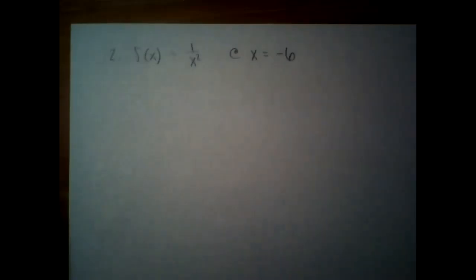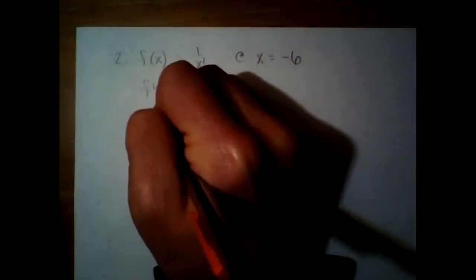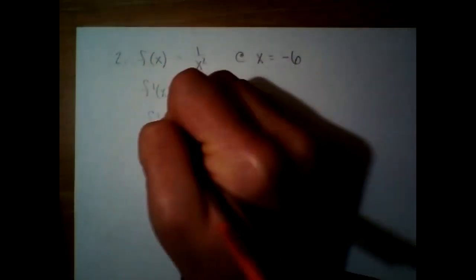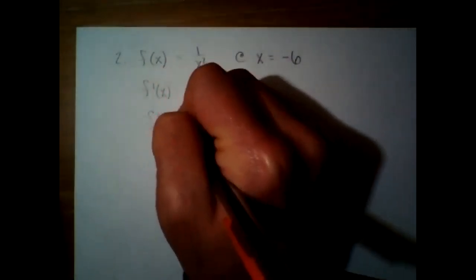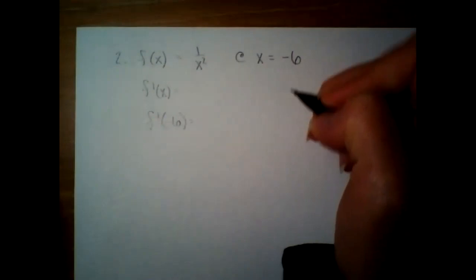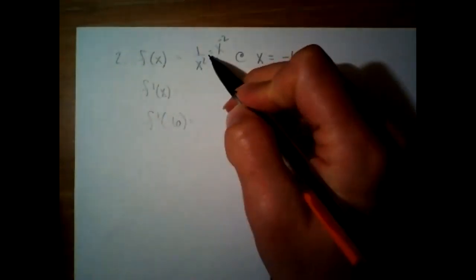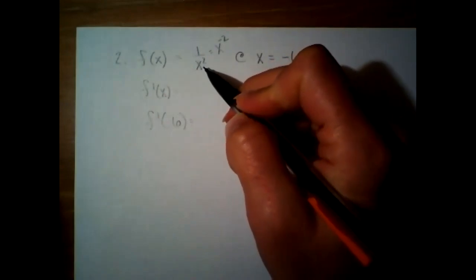For this one, we're going to find the derivative and then plug in negative six. I am going to rewrite this equation as x to the negative two. When we divide, that means we're going to have a negative exponent.